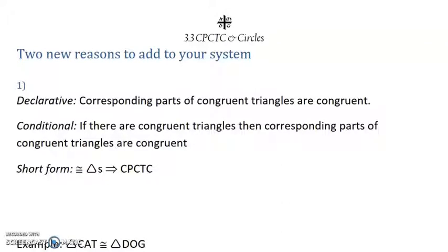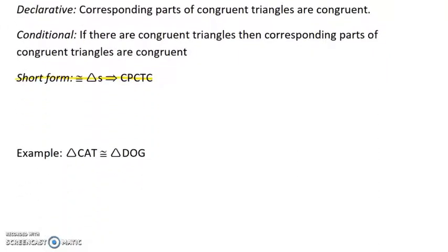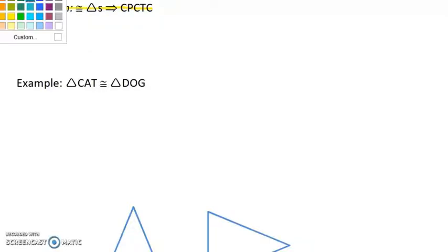Today we're going to add two new reasons to our system. The first, in short form, would be written in red: if we have congruent triangles, then the corresponding parts of the congruent triangles are congruent.